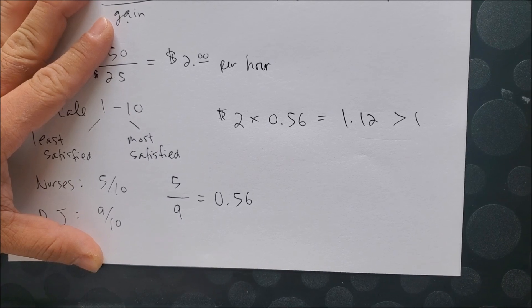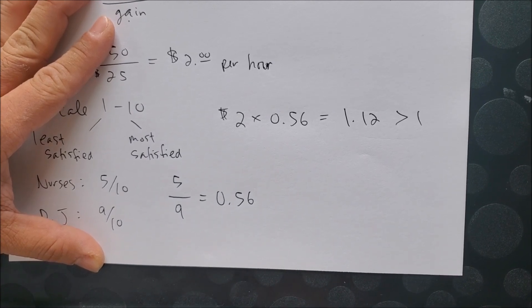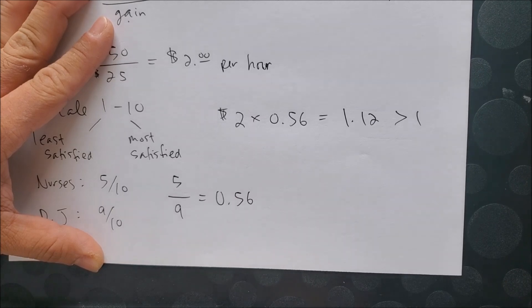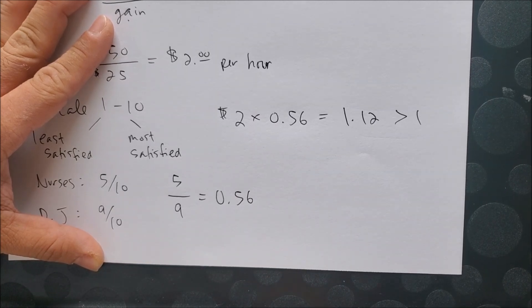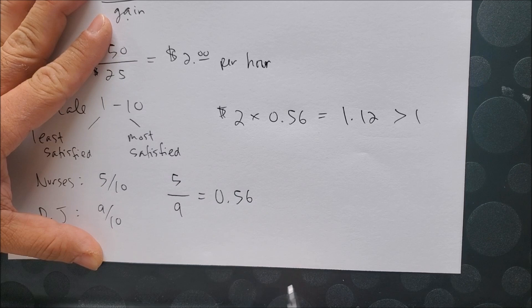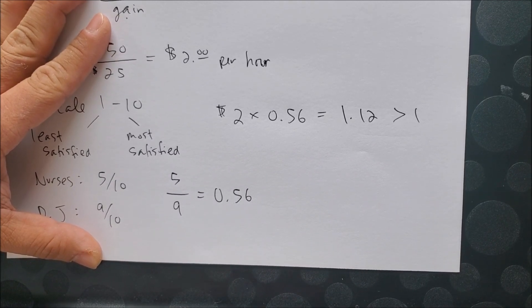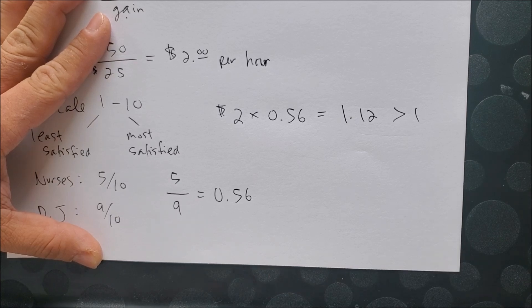So based on 1.12, it might be best for you to switch careers, enroll in nursing school and hit the books, become a nurse. If you have a number that is less than one, it would make sense to stick with DJing as a career.